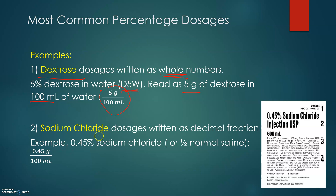The second common example is sodium chloride. Look at the label on the right — sodium chloride with a concentration of 0.45%. Note that sodium chloride concentration is usually written as a decimal fraction. This is still a percent, not a percent converted to a decimal. It can also be called half normal saline, interpreted as 0.45 g per 100 mL, or 450 mg per 100 mL.